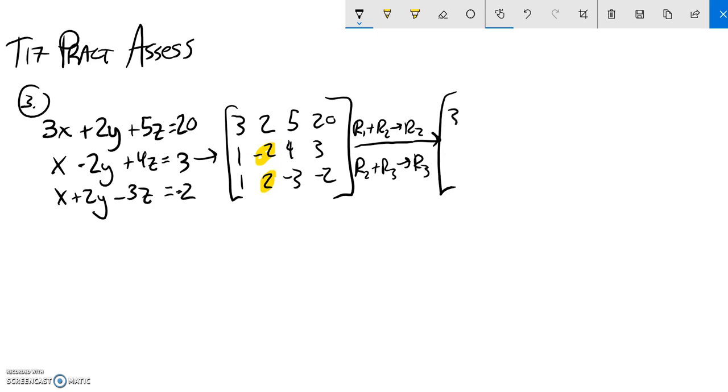So first row is going to be unchanged: three, two, five, twenty. The next row, row one plus row two, so three plus one is four, two plus negative two is zero, five plus four is nine, twenty plus three is twenty-three. Then my next one, row two plus row three, so one plus one is two, negative two plus two is zero, four plus negative three is one, three plus negative two is also one. Great.